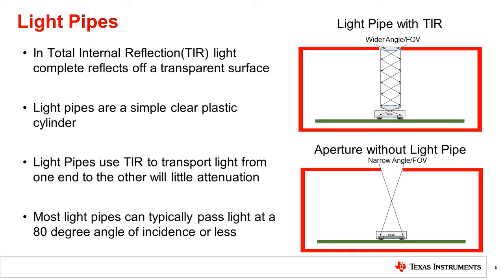Light pipes are the final optical element we will discuss to increase the field of view of a light sensor. When light hits an interface between two materials with different indices of refraction, it will usually reflect and transmit some amount of the light depending on the angle of incidence. If the light is traveling from a material with a higher index of refraction to a lower index of refraction and is at or above a certain angle of incidence called the critical angle, all light will be reflected. This is known as total internal reflection or TIR.